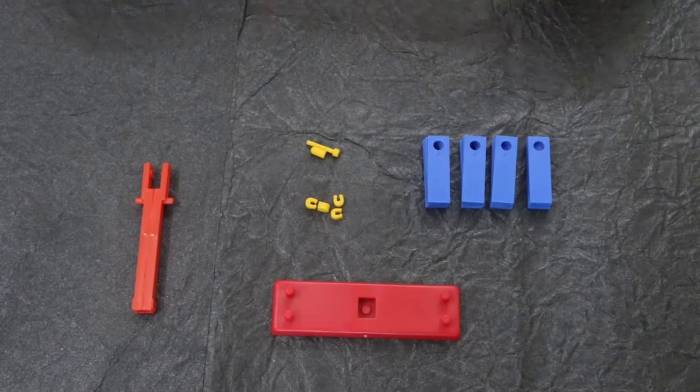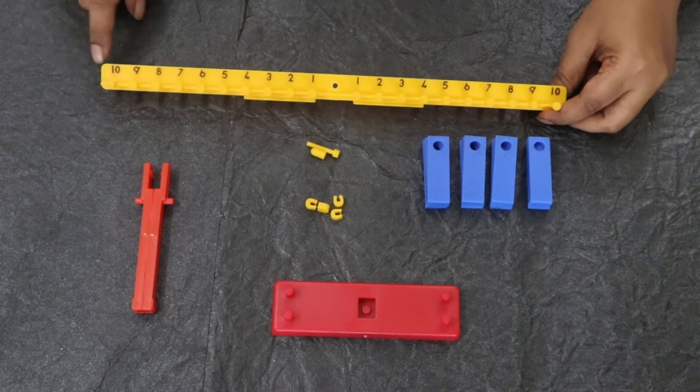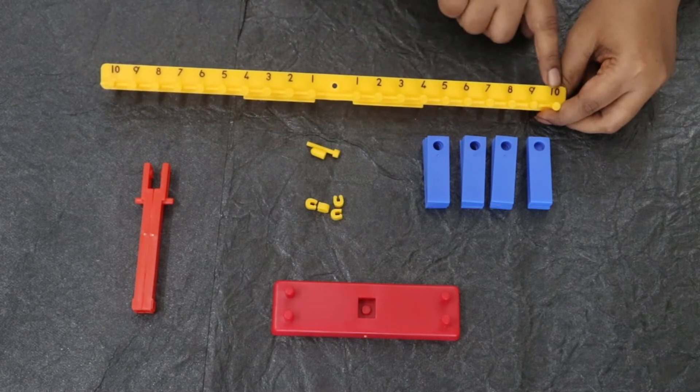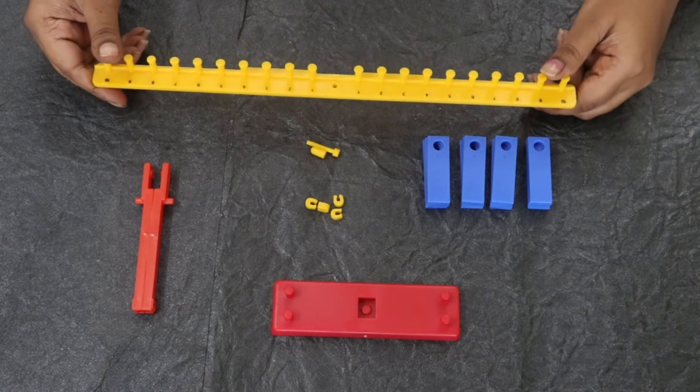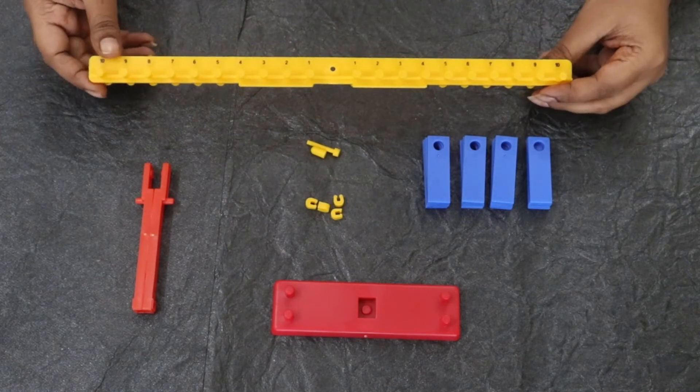Now the most important part is the number bar. As you can see there are numbers inscribed on the number bar from 1 to 10 on either side and also at the back side of the number bar. There are also some knobs where you can place the weighing strips.